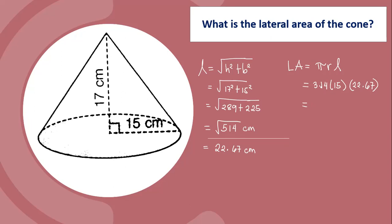Multiply: 3.14 times 15 times 22.67 equals 1067.757 centimeter squared.